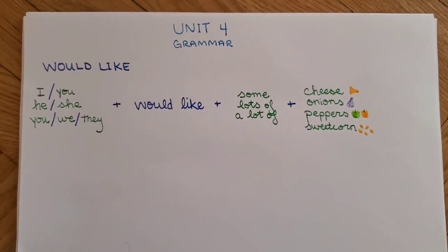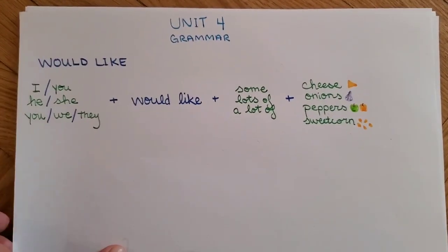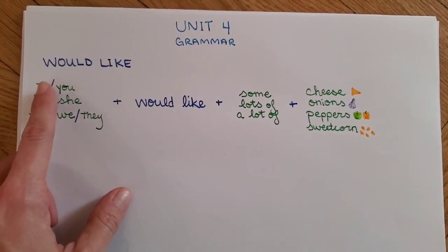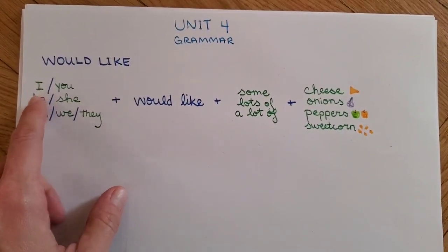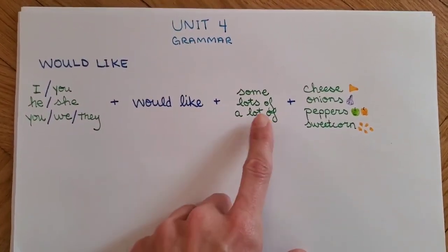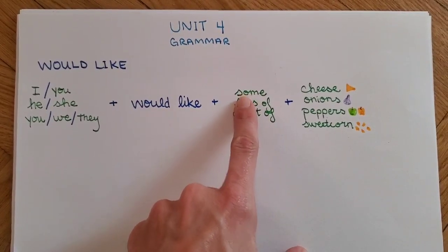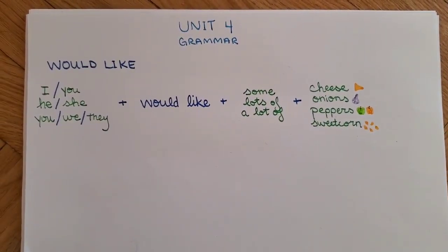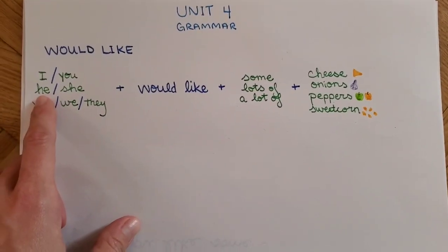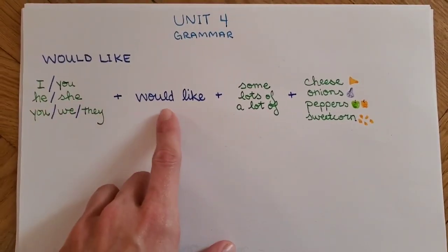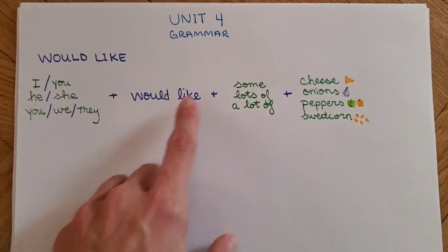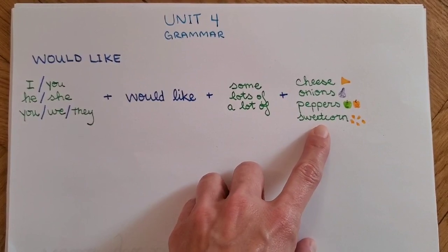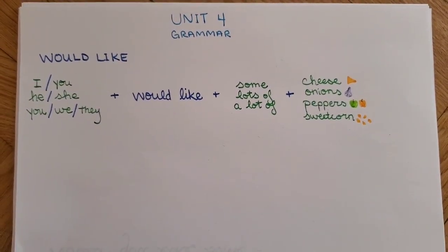So we can say, for example: 'I would like some peppers on my pizza.' 'He would like lots of sweet corn in his salad.'